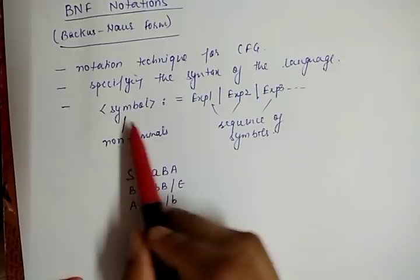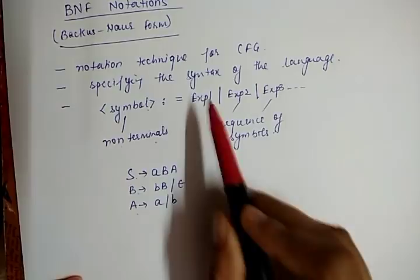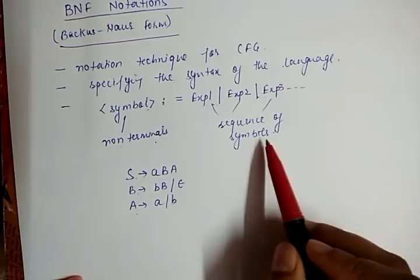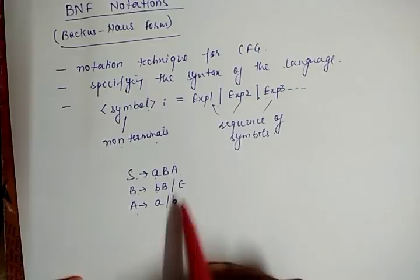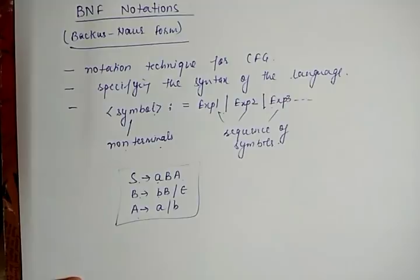Here, the symbols can be non-terminals which we represent as S, B, and A. These expressions are sequences of symbols which are combinations of terminals and non-terminals. For example: small a, capital B, capital A, small b, capital B, and epsilon. This representation is called BNF form.